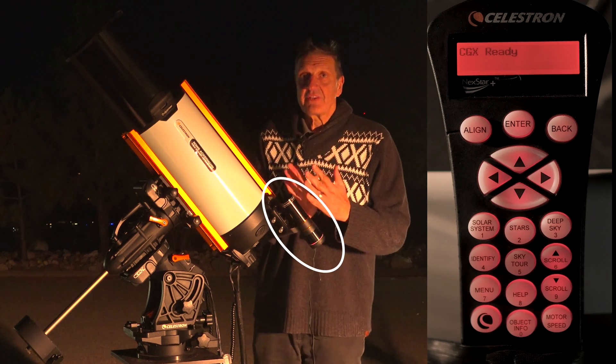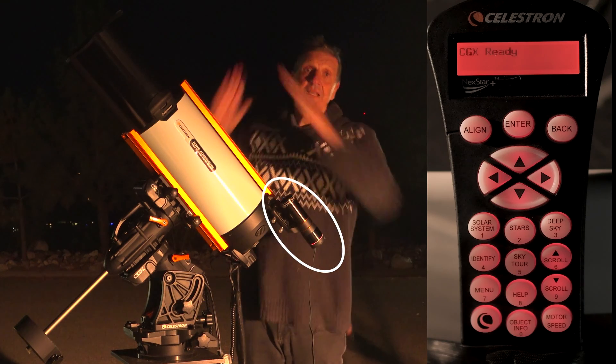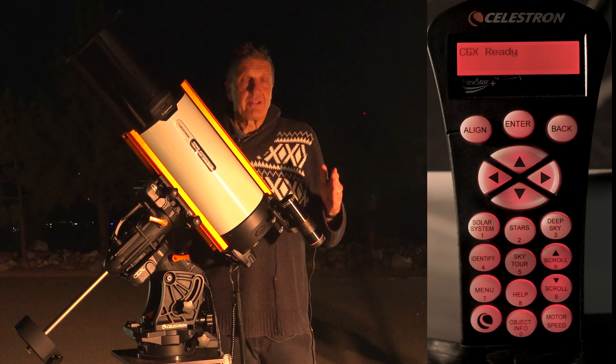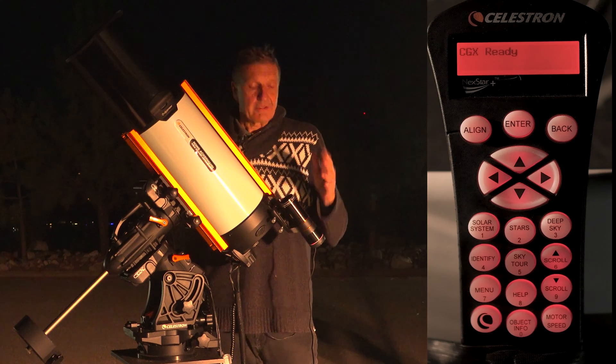That means the StarSense Autoguider has to look exactly at the same spot in the sky as your camera, and there may be a small offset, and that is what we call center calibration.